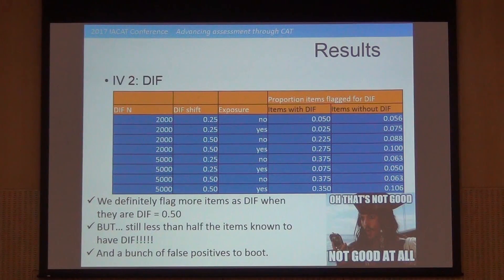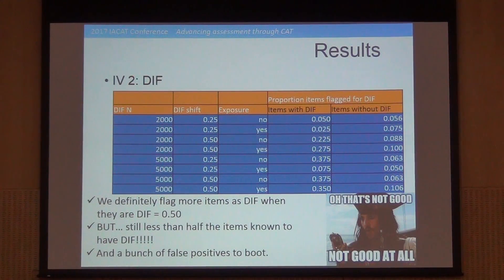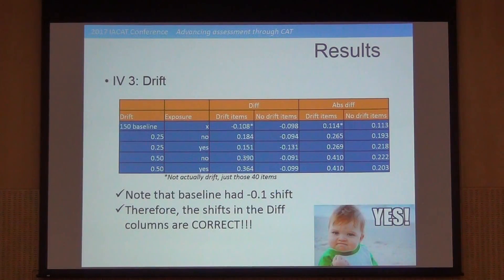This was pretty disturbing: in no case would you find even half the items that had actual bias. So even though I created a fairly strong bias situation and made it fairly easy to find — with half the population in the minority group in one condition — we still couldn't detect even half the truly biased items. This wasn't going well at all, and it probably would have performed even worse with non-CAT data.